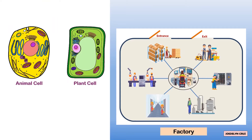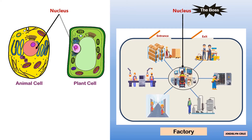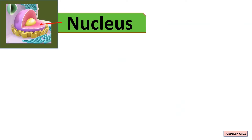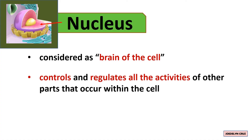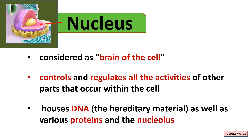Inside the factory, there is a boss. The boss represents the nucleus. It controls all the movements happening inside the factory and tells how the factory should operate. The nucleus is considered the brain of the cell because it controls and regulates all the activities of other parts within the cell. It also houses DNA, the hereditary material, as well as various proteins and the nucleolus.